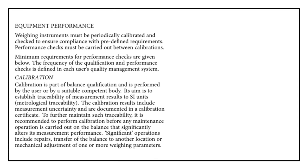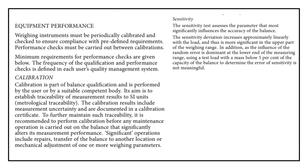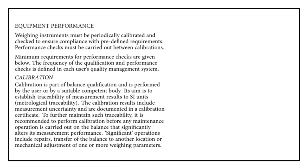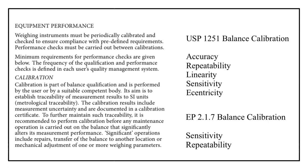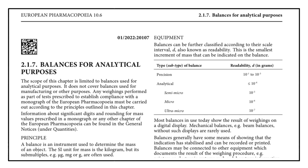As per EP chapter 2.1.7, there are two test parameters for balance calibration: sensitivity and repeatability. In contrast, USP specifies five balance calibration parameters: accuracy, repeatability, linearity, sensitivity, and eccentricity. This highlights a key difference between EP and USP journal chapters with respect to balance calibration requirements.